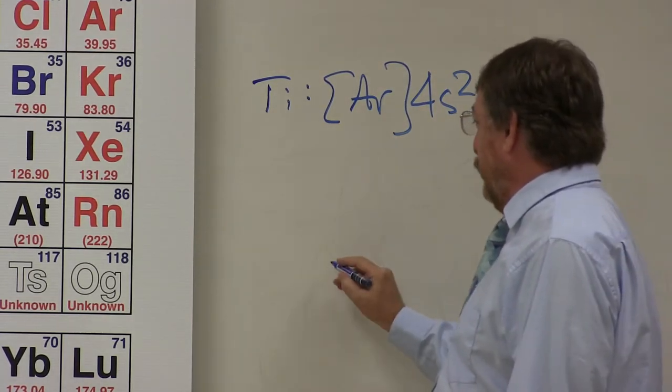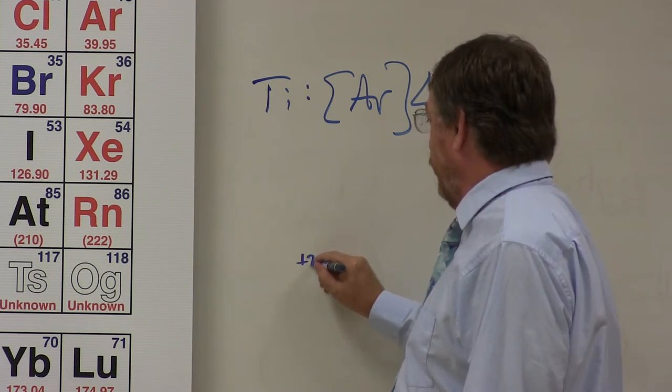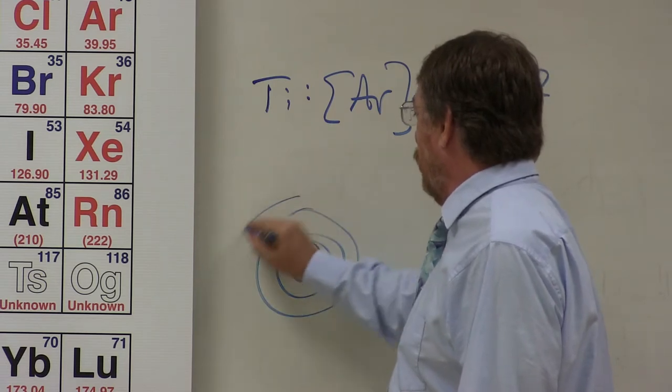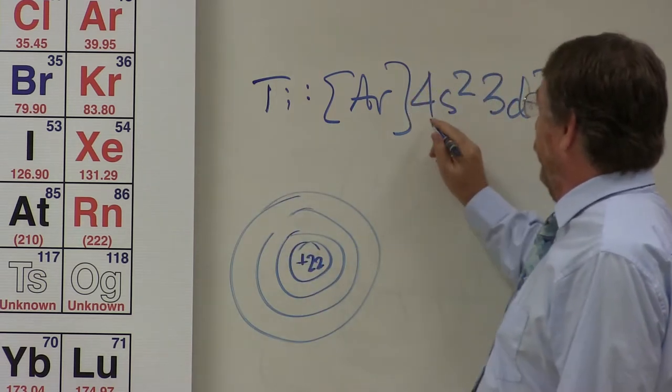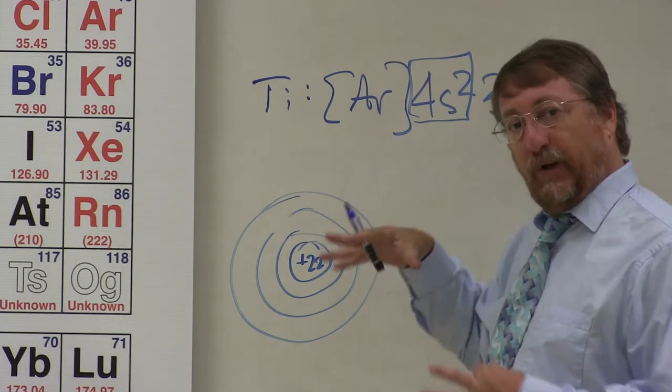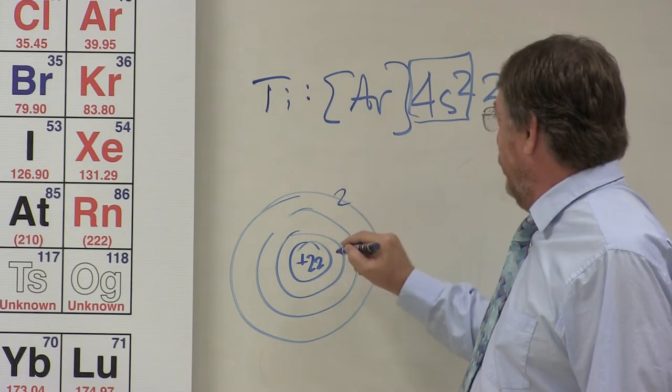You'd say, well what does that look like? Well we've got an argon core, we've got titanium with a plus 22 nucleus, and then we've got clearly four energy levels. The final s-set is right here, so these are the furthest out, or they reach the furthest out. So we only have two electrons sitting here.